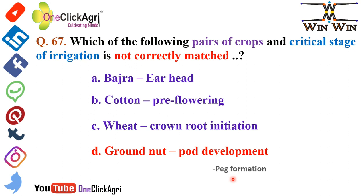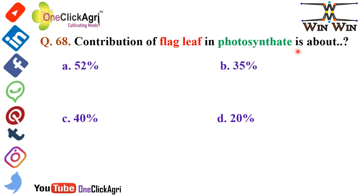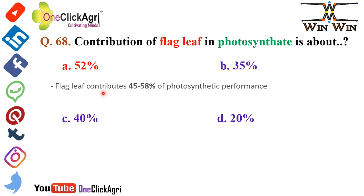Question 68: Contribution of the flag leaf in photosynthesis is about 52%. A recent paper gives the flag leaf contribution as 45 to 58% of photosynthetic performance. If asked about grain yield, the flag leaf contributes 41 to 55% of grain yield.